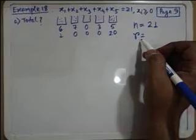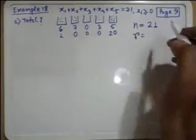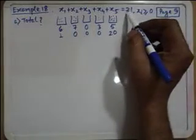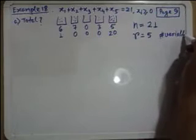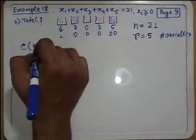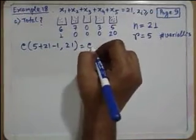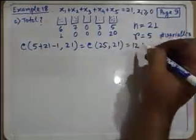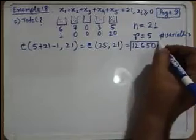R is how many different types — the number of baskets, which is five. So n is the total value on the right-hand side of the equation, and r is the number of variables. The formula gives us 5 plus 21 minus 1 choose 21, which is 25 choose 21, equal to 12,650. That is your final answer for part A.